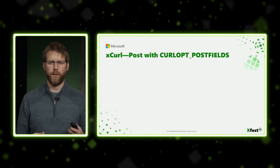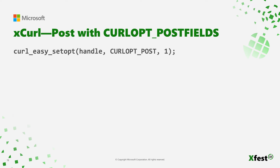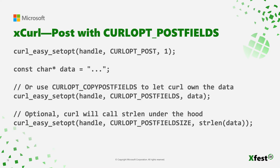If we want more complicated requests and want to send data up to the service, first start by setting the POST verb. This tells curl that you are actually going to be sending data and not just waiting to receive something. CURLOPT_POSTFIELDS takes a null-terminated string — the data you would like to send up to your service. If you use post fields, you must make sure that this string is available throughout the lifetime of the request until curl_easy_perform returns. Optionally, if you don't want to maintain that lifetime yourself, you can use CURLOPT_COPYPOSTFIELDS, at which point Xcurl will make a copy of your data and maintain it internally until the request completes. To determine how much data is going to be sent, Xcurl will call strlen on the string you provided. If you know the length of your string ahead of time, you can pre-populate that field with CURLOPT_POSTFIELDSIZE so curl doesn't have to spend extra cycles walking the length of your string.